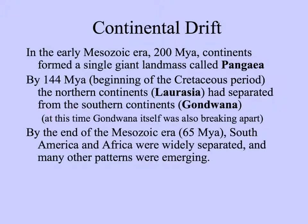By 144 million years ago, at the beginning of the Cretaceous Period, the northern continents had separated from the southern continents — the northern continents called Laurasia, the southern continents Gondwana. By the end of the Mesozoic era, 65 million years ago, South America and Africa were widely separated, and many other patterns were emerging.